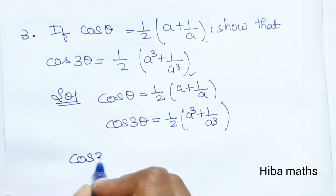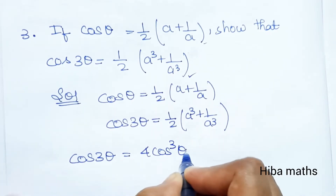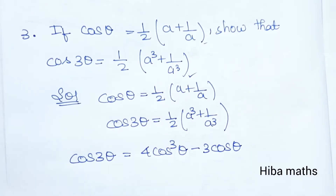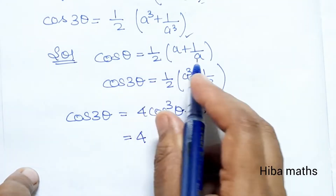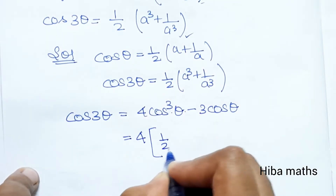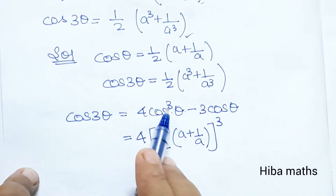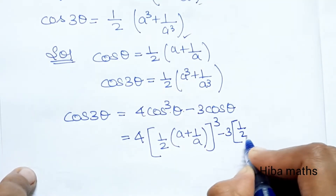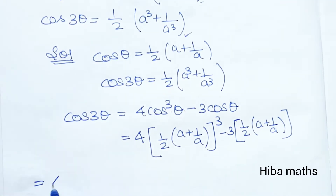So cos 3 theta has the formula 4 cos cube theta minus 3 cos theta. We substitute cos theta = 1/2 (A plus 1/A), giving us 4 into (1/2 A plus 1/A) whole cube minus 3 into (1/2 A plus 1/A).